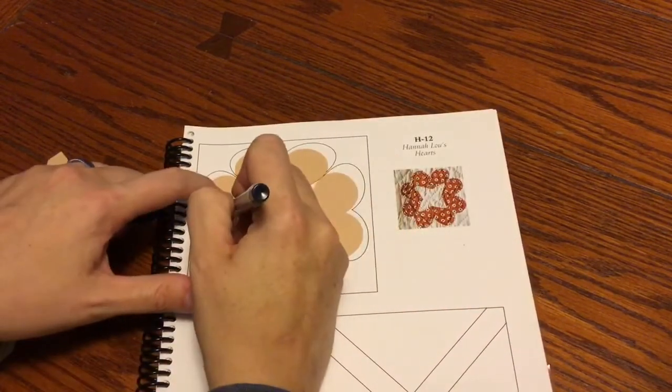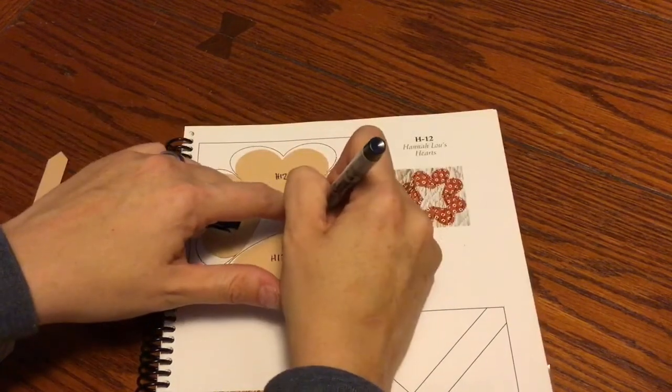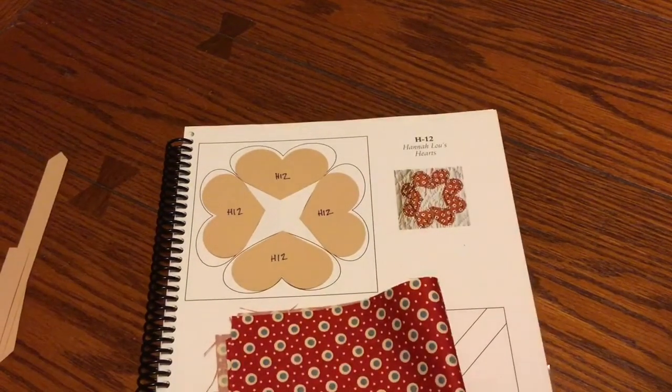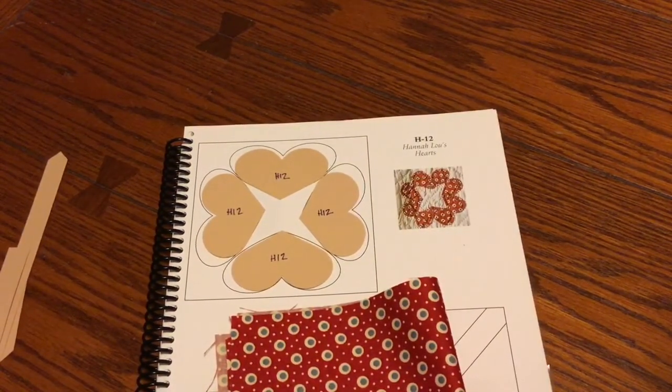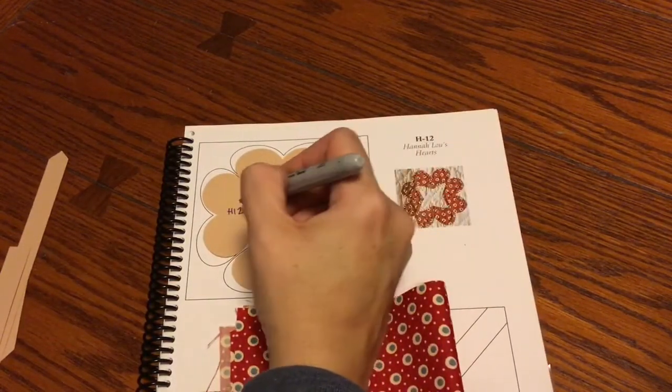And I do not have a directional fabric for H12 so I don't need to worry about any arrows. And this, because this is my fabric for H12, and I will put little dots on these. And that will be the end of my bag sort for H12.